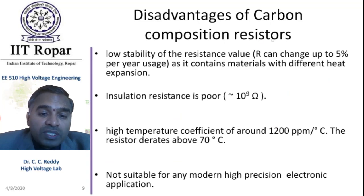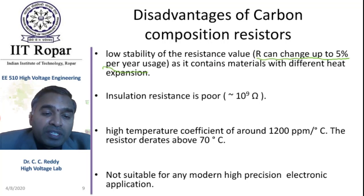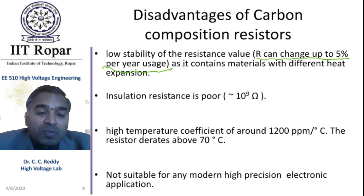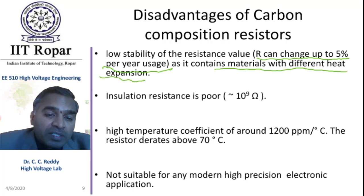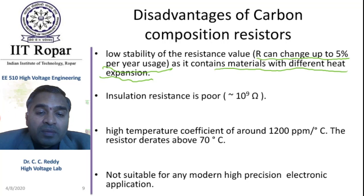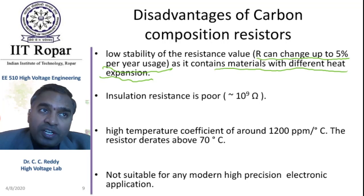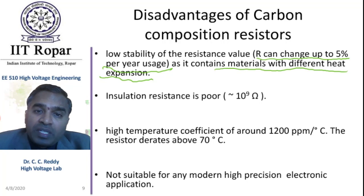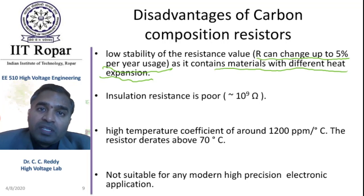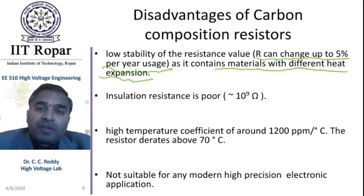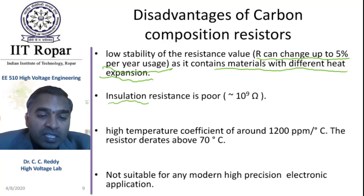Disadvantages of carbon composition resistors: low stability of the resistance value — R can change up to 5% per year of usage. This is one problem, as it contains materials with different heat expansion coefficients. The resistance is achieved by mixing carbon particles in clay, an insulating material. Since different materials have different expansion coefficients, during heating and cooling over a period of time, the resistance value changes.